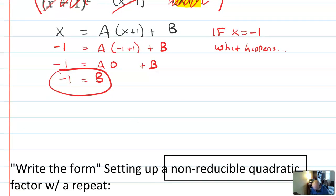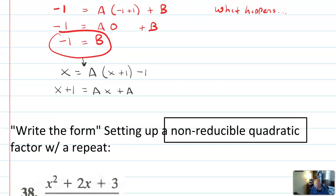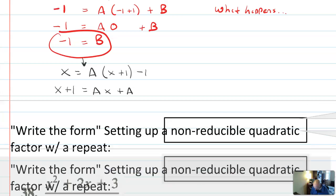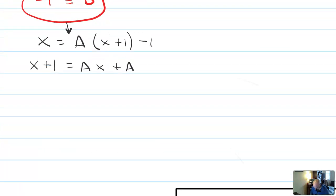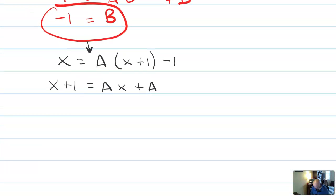But what I can do is use what I've found for b and rewrite this out. So if I substitute that value negative one in for b here, I don't immediately get an answer, because that's not how this works usually. But I do have something I can work with. So if I substitute negative one in, I get x equals a x plus one minus one, I can add one to both sides. And I can also distribute the a.